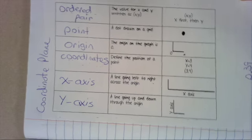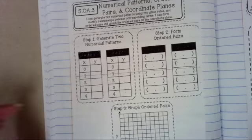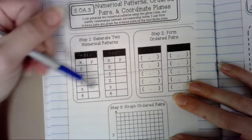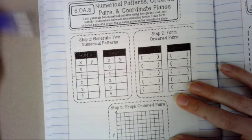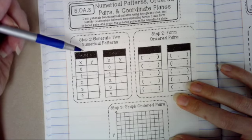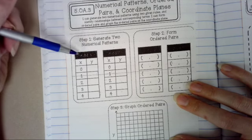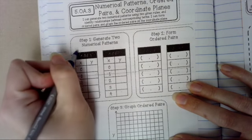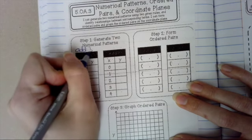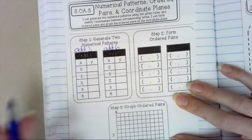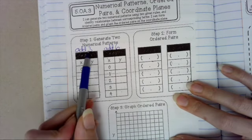Alright, so we're going to apply some of those words to the next page in our notebook. Apply some of those terms. So we have patterns here in tables with XY coordinates. This pattern says add 3 and this one says add 6.